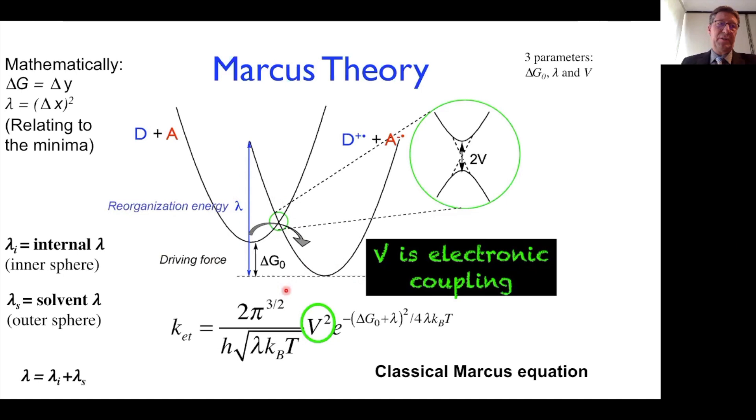The Marcus equation contains three important parameters: the delta G, the exergonicity or driving force; the lambda, the reorganization energy; and the V, the electronic coupling. The V tells you something about the overlap of the electronic wave functions of the electron donor and the electron acceptor, the D and the A. It is a measure for the interaction between the two states.